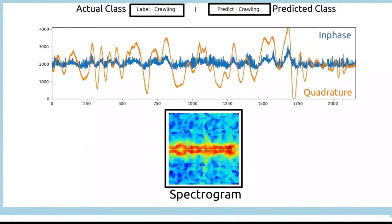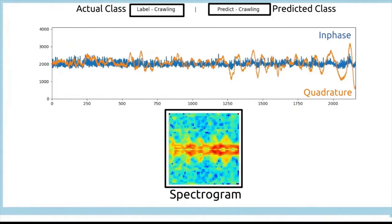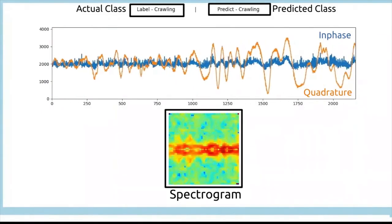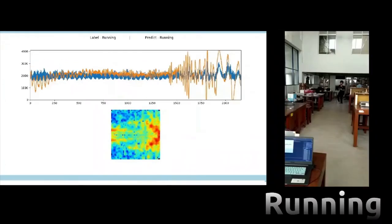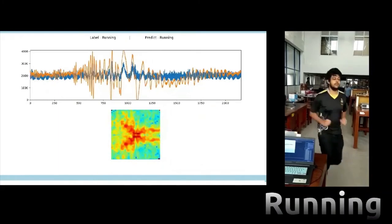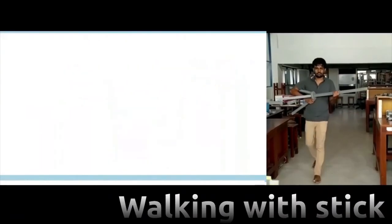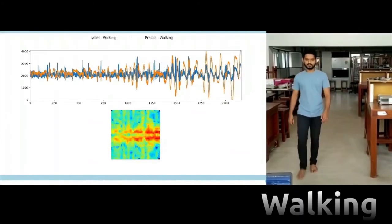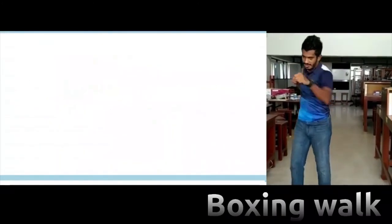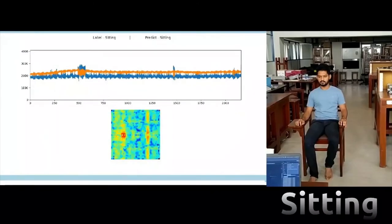Next, we will see the in-phase and quadrature components of the received signal and its spectrogram and the predicted human motion class in each action, namely jumping jacks, boxing, running, crawling, walking, walking with the stick, boxing walk, jumping, and finally sitting.